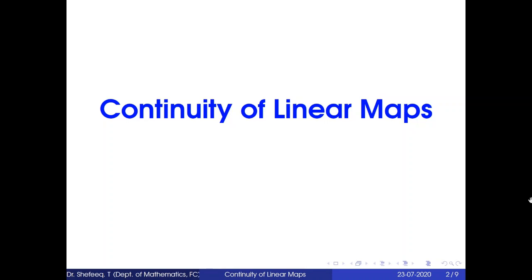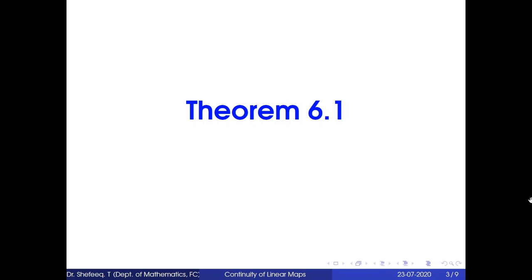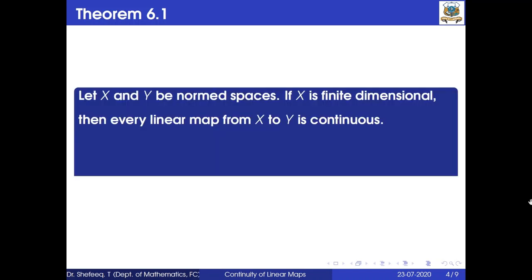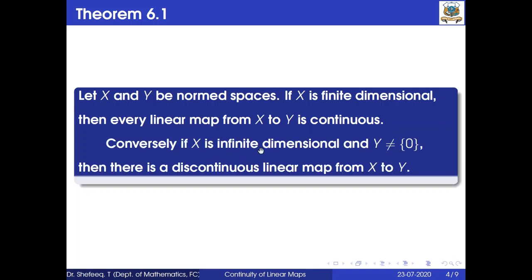We start this section with Theorem 6.1, which states: let X and Y be two normed spaces. If X is finite dimensional, then every linear map from X to Y is continuous. Conversely, if X is infinite dimensional and Y is not equal to the singleton {0}, then there exists a discontinuous linear map from X to Y.